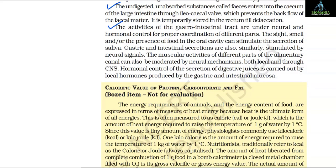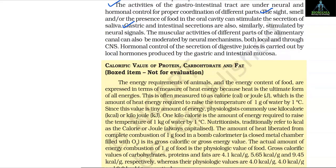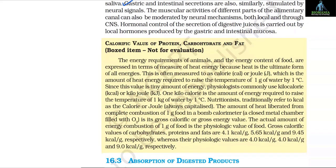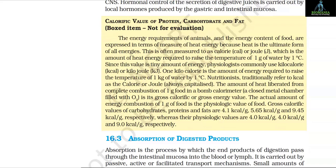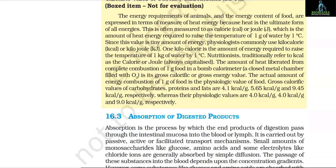The activities of the gastrointestinal tract are under neural and hormonal control for proper coordination of different parts. The sight, smell and/or the presence of food in the oral cavity can stimulate the secretion of saliva; gastric and intestinal secretions are also similarly stimulated by neural signals. The muscular activities of different parts of the alimentary canal can also be moderated by neural mechanisms, both local and through the CNS. Hormonal control of the secretion of digestive juices is carried out by local hormones produced by the gastric and intestinal mucosa. The energy requirements of animals and the energy content of food are expressed in terms of heat energy — calories or joules — which is the amount of heat energy required to raise the temperature of 1 gram of water by 1 degree Celsius.